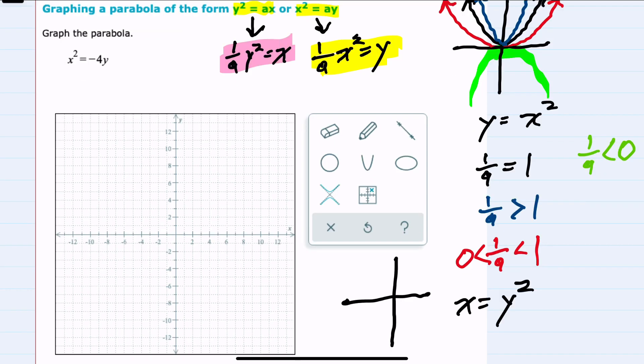When we look at x being the variable by itself and y squared, we have a similar thing, except now it opens to the right. When that 1 over a coefficient in front of y squared is greater than 1, it again becomes more narrow.